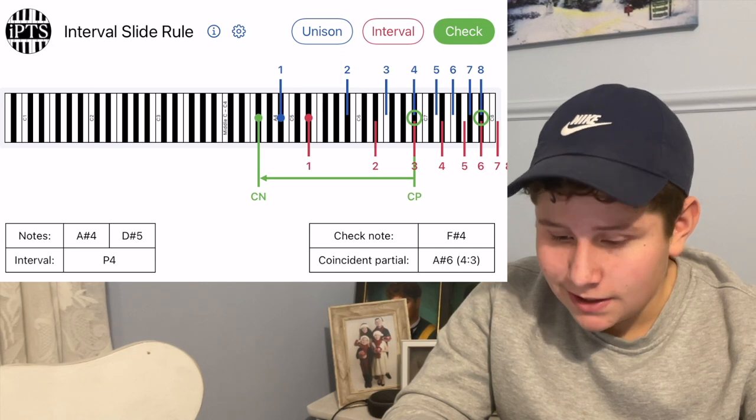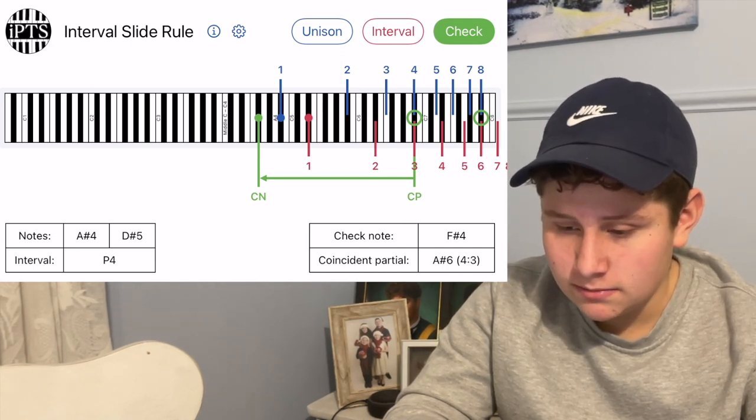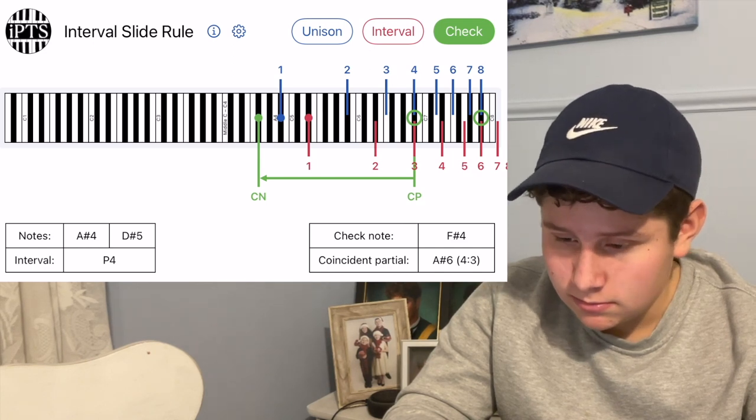Is there anything else written on there? Coincident, partially. Anything else? A-sharp 6, 4, 3, whatever that. Yeah? Anything else? No. Alright.